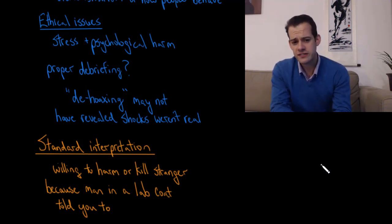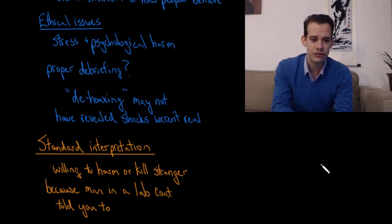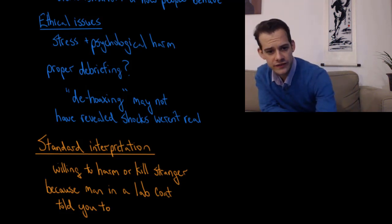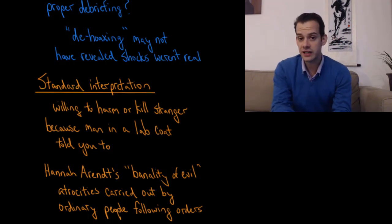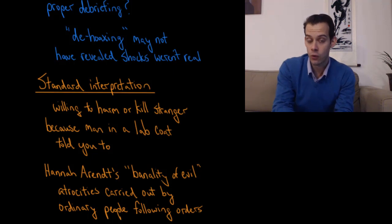And the way that this study is often summarized, sort of the standard interpretation, is that most people would be willing to harm or kill a stranger just because a man in a lab coat told them to. And this fit in with other views at the time, such as Hannah Arendt's idea of the banality of evil. This was the idea that atrocities like the Holocaust were carried out by ordinary people who were just following orders.